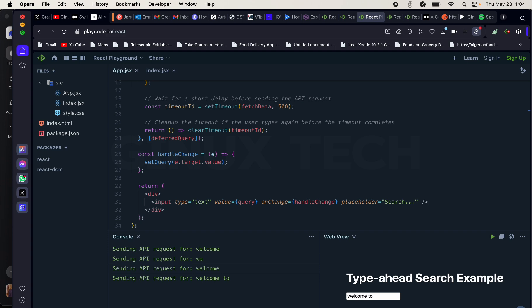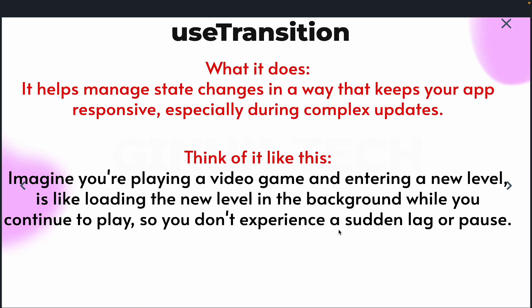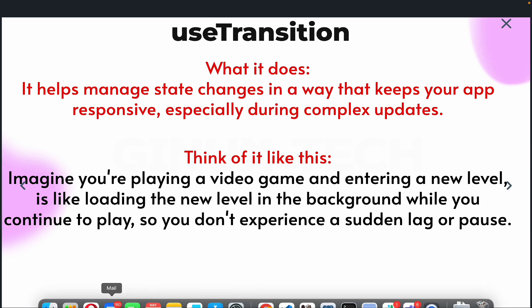The fourth hook is useTransition. What it does is help manage state changes in a way that keeps your app responsive, especially during complex updates. Think of it like playing a video game and entering a new level — it's like loading the new level in the background while you continue to play, so you don't experience a sudden lag or pause. useTransition simply means you can change something on your webpage in the background without disturbing what the user is currently doing.